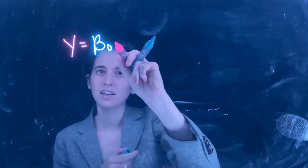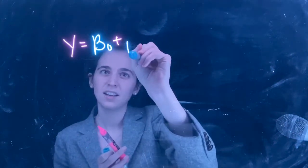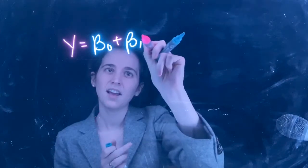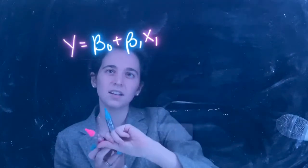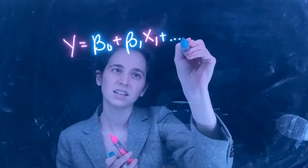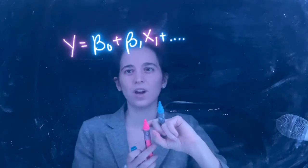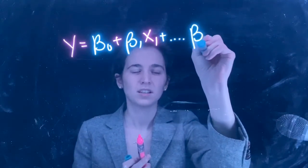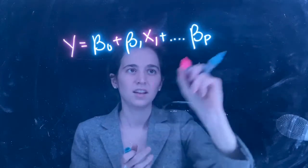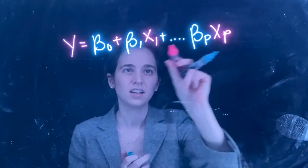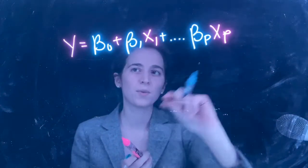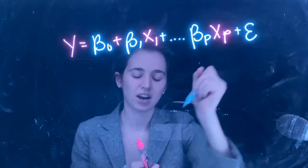beta 0 plus beta 1 x1 plus all the way up to beta p xp. So this is the common form, and then we've got one extra important term: the error.